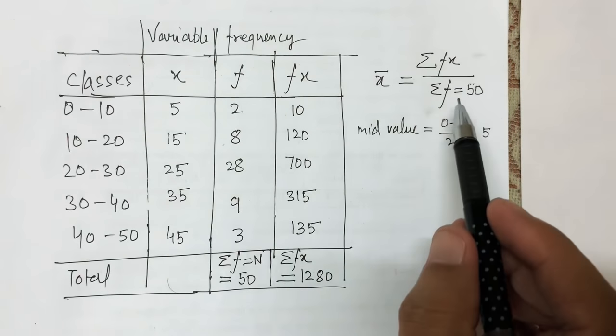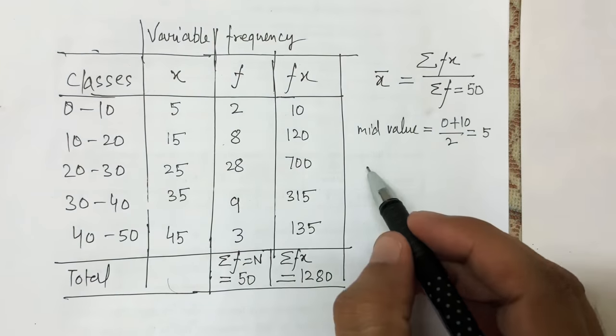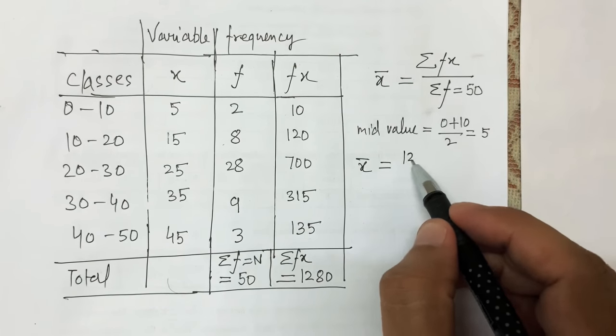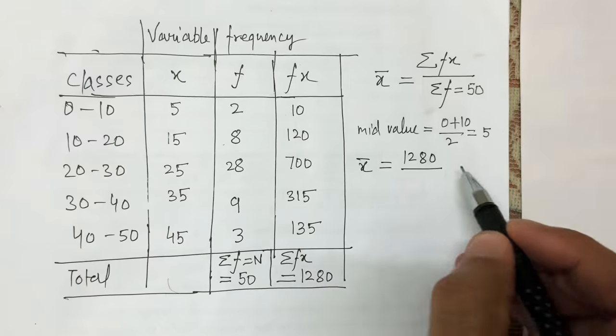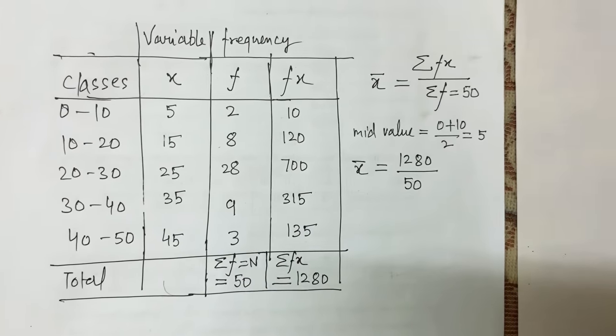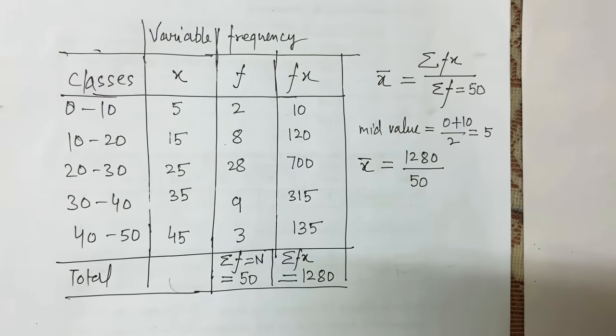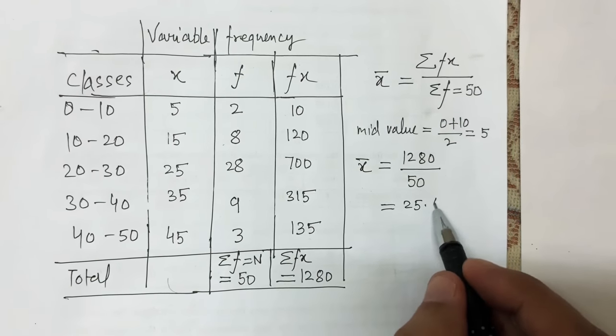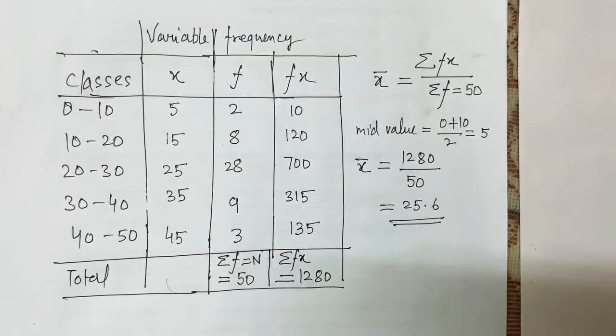I have both values for the formula: numerator and denominator. x̄ = 1280/50 = 25.6. This means on average, a student is scoring 25.6 marks.